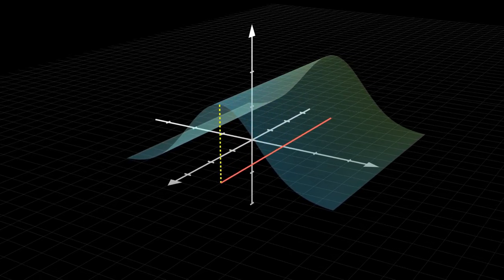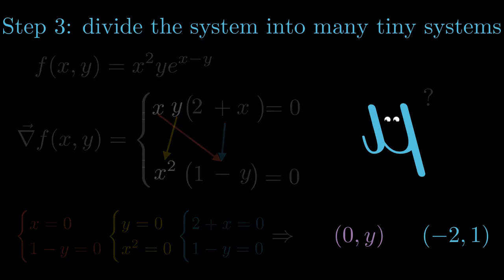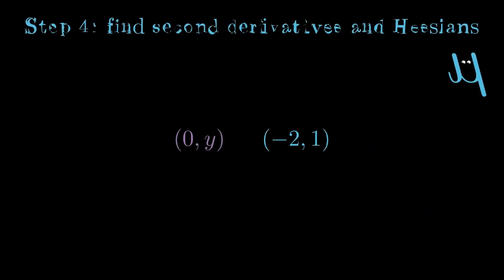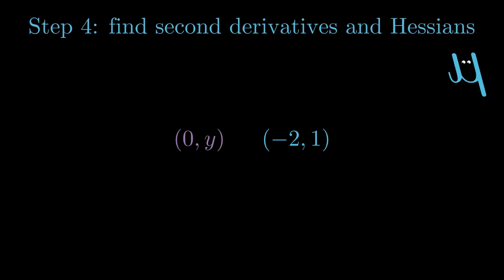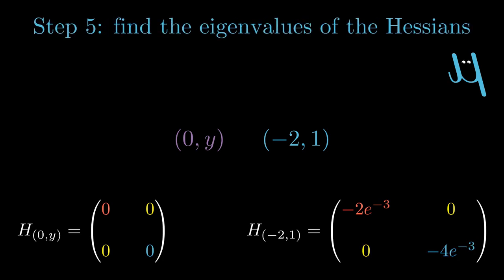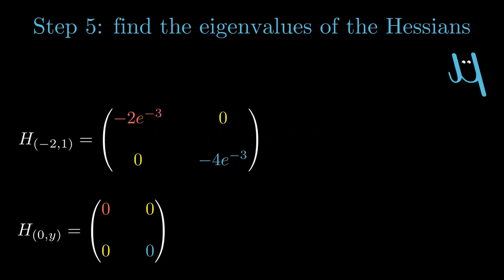Now that we have defined the two families of extreme points, we can finally classify them, by proceeding to step four. Find the second derivatives and the Hessian. I will not show the calculations, but I invite you to verify that the Hessian of our points can be written like this. Now, let's go to the fifth and final step. Find the eigenvalues of the Hessian.